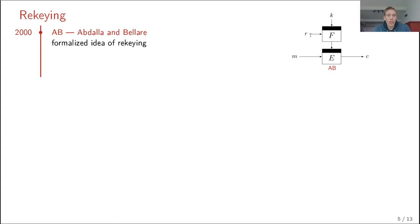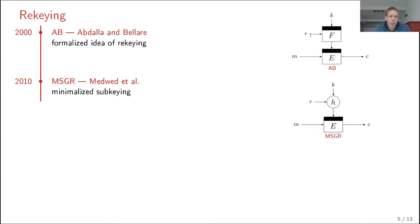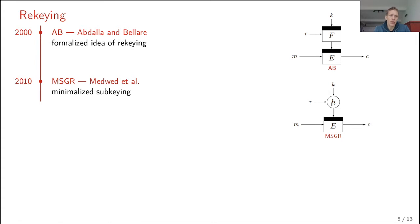It took a couple of years before follow-up work came. Medved et al. in 2010 looked at minimalized re-keying — instead of a random function, you take a universal hash function. Notably, it really resembles the idea of Abdallah and Bellara, although Medved et al. didn't notice this connection.